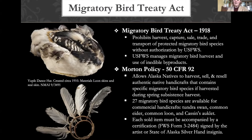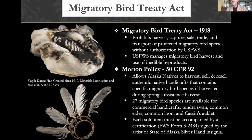The Morton policy recently changed this for a key few species, allowing Alaska Native artists to harvest, sell, and resell authentic Native handicrafts containing specific migratory bird species if harvested during their spring subsistence harvest. This applies only to rural residents harvesting during subsistence — usually in the spring — and does not include anything harvested during the normal fall sport season. About 27 migratory bird species are on this list, including Tundra Swans, Common Eider, Common Loon, and Auklets. This list is subject to change, so consult U.S. Fish and Wildlife Service.